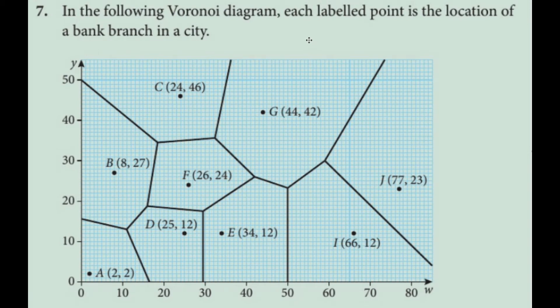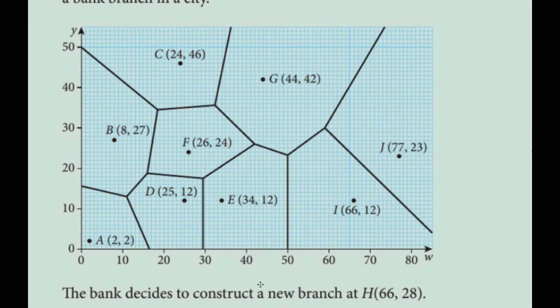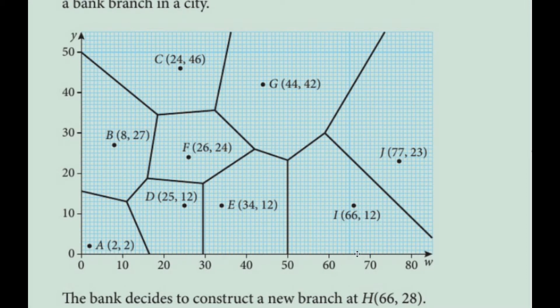Okay, so we're working on Voronoi diagrams, and we are going to consider constructing a new branch at H, which is at point (66, 28).